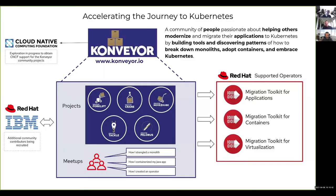Conveyor is a project community in which we're passionate about moving workloads — moving things from A to B, making them portable, and understanding and discovering the patterns that enable you to become more cloud native. The idea is that you can modernize your workloads and turn them into containers running on Kubernetes so you can get all the benefits from doing so.